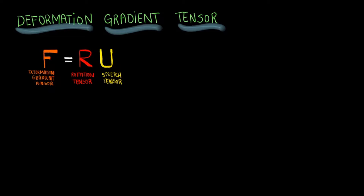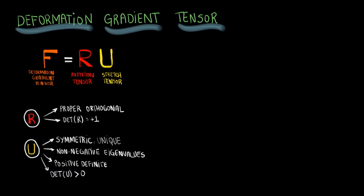The rotation tensor will be a proper orthogonal tensor, which means that its determinant is positive 1. All the eigenvalues of the symmetric matrix will then be non-negative. The stretch tensor will be a unique symmetric tensor that is also positive definite.